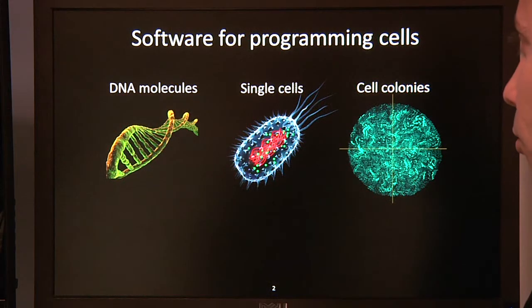First and foremost, programming cells is highly complex and error-prone, and powerful computer software is needed to accelerate further progress. So in this demo, I'll be presenting computer software for programming cells at three levels: DNA molecules, single cells, and cell colonies.